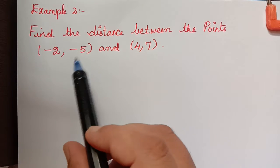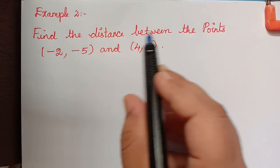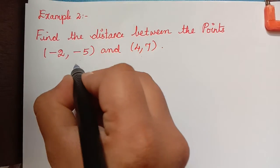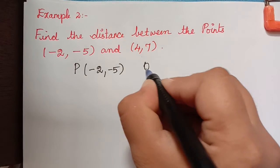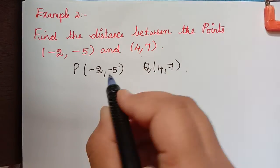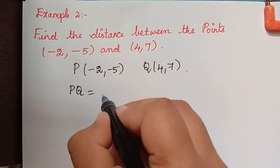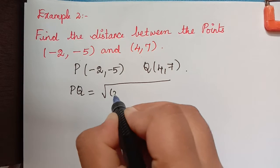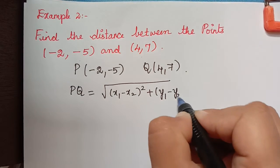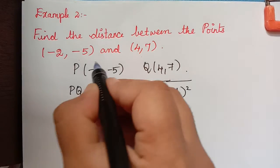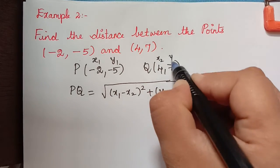Let me explain this with the help of one more example. Here we have two points and we have to find the distance between them. So let us take point P as minus 2 comma minus 5 and point Q as 4 comma 7. We have to find PQ using the formula: PQ equals square root of (x1 minus x2) whole squared plus (y1 minus y2) whole squared, where x1, y1 belongs to P and x2, y2 belongs to Q.